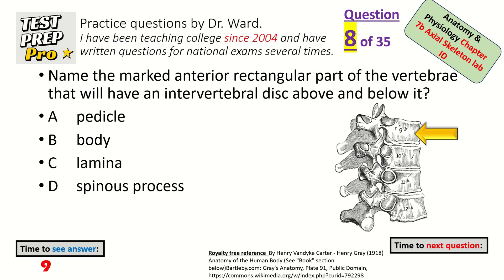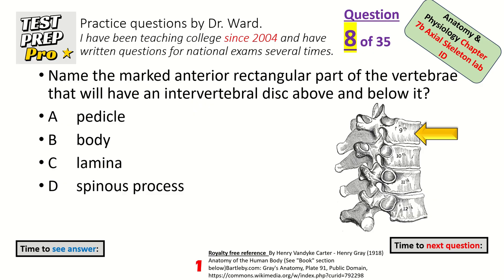Name the marked anterior rectangular part of the vertebra that will have an intervertebral disc above and below it. Also called centrum.